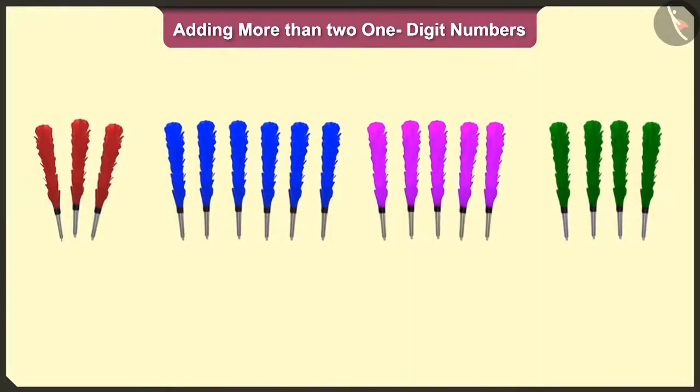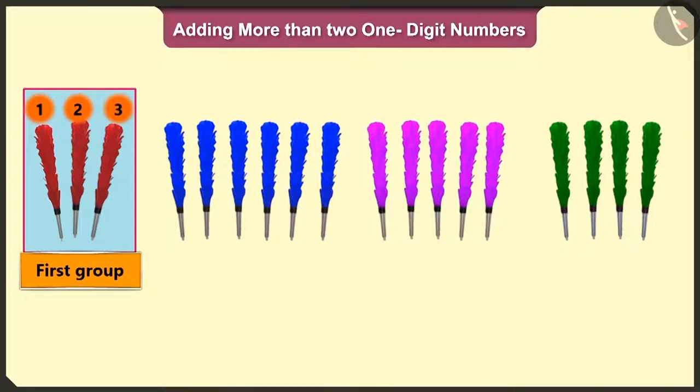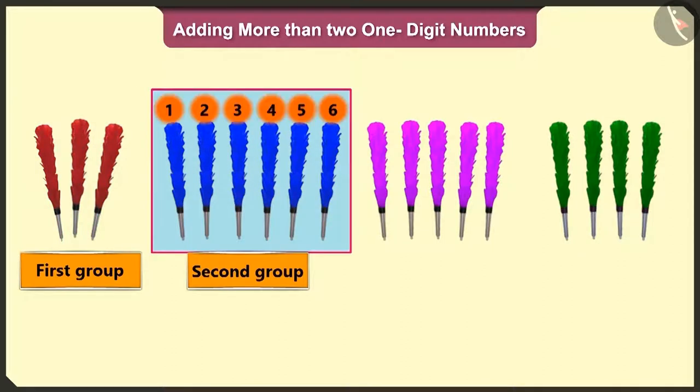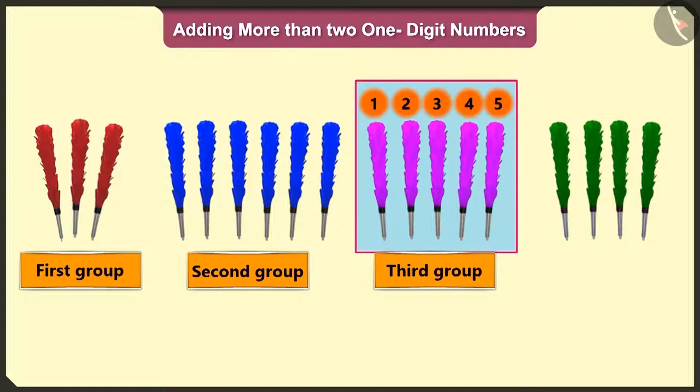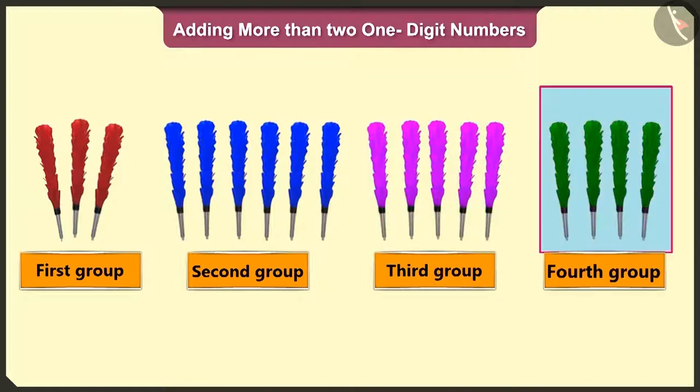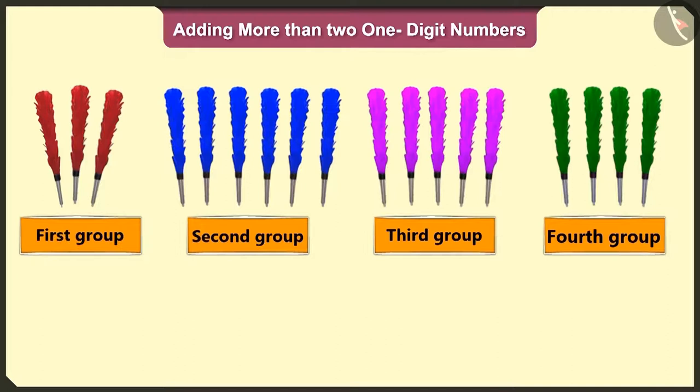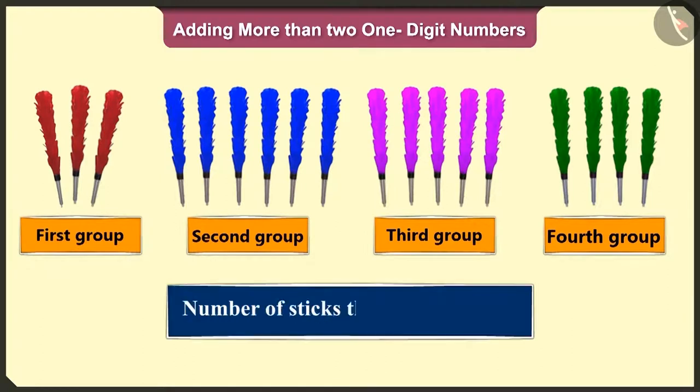See Pilloo, this magician has three sticks in the first group, six in the second, five in the third, and four in the fourth group. So now can you tell me the total number of sticks the magician has?